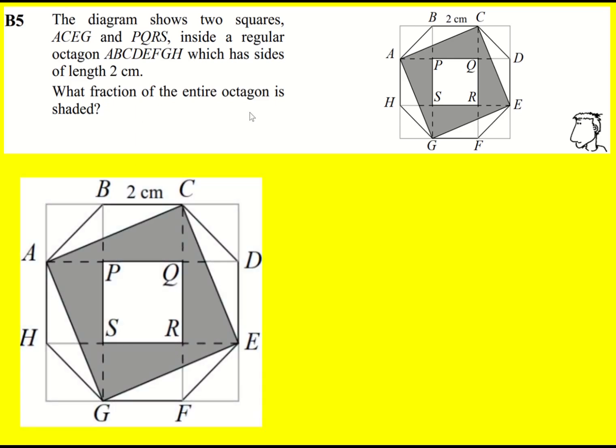We have an octagon, a regular octagon with sides of length 2. I'm going to ask what fraction of the entire octagon is shaded.